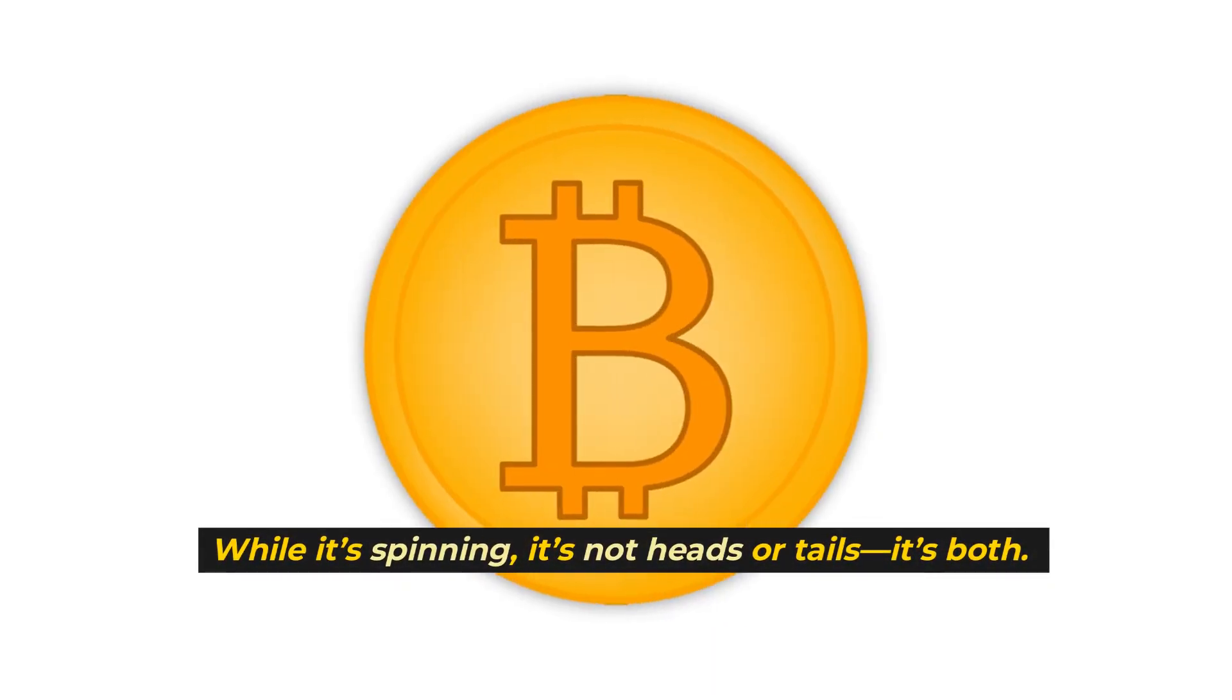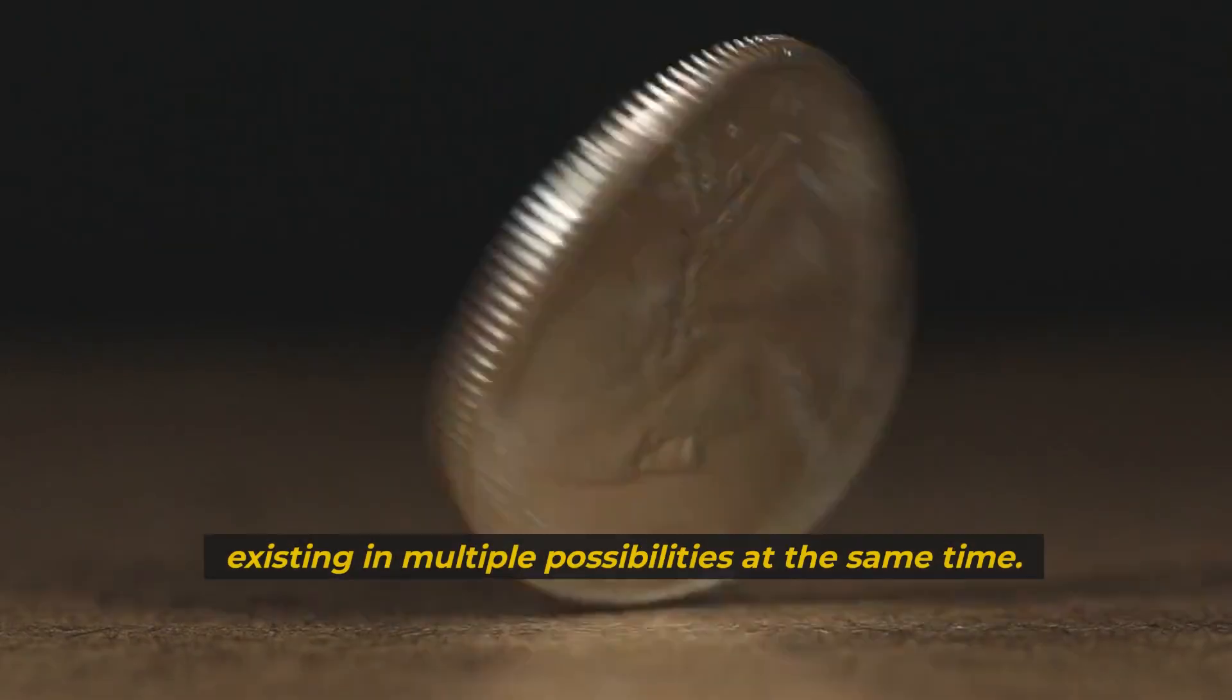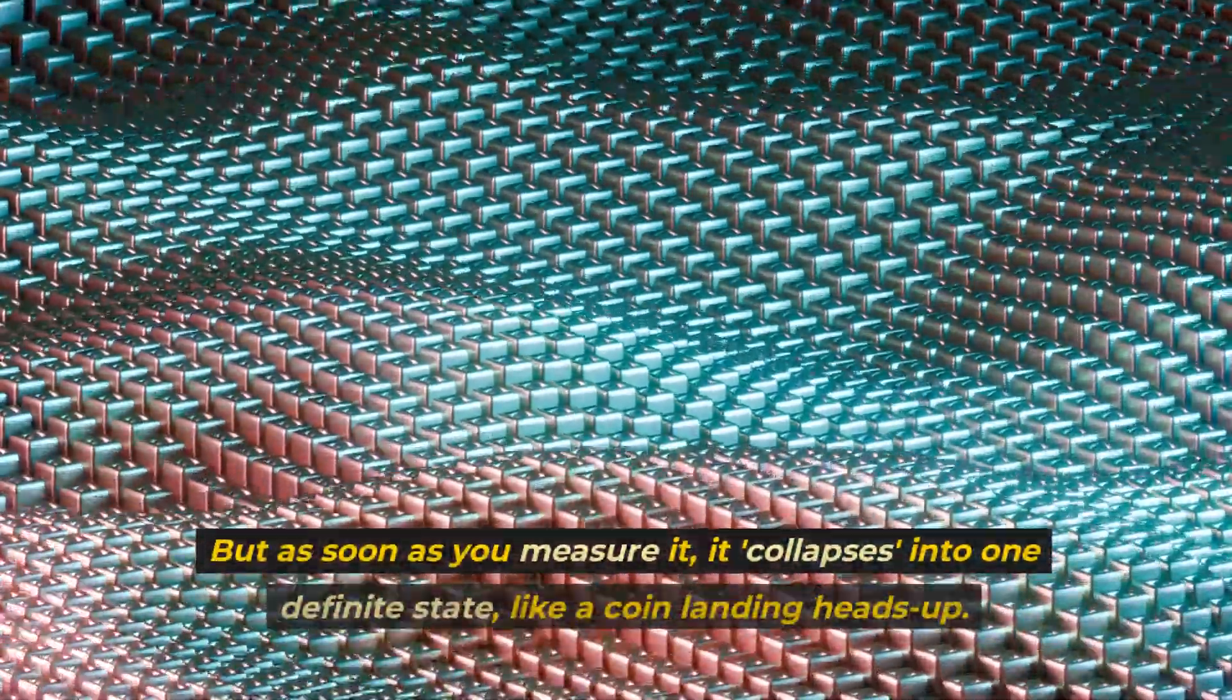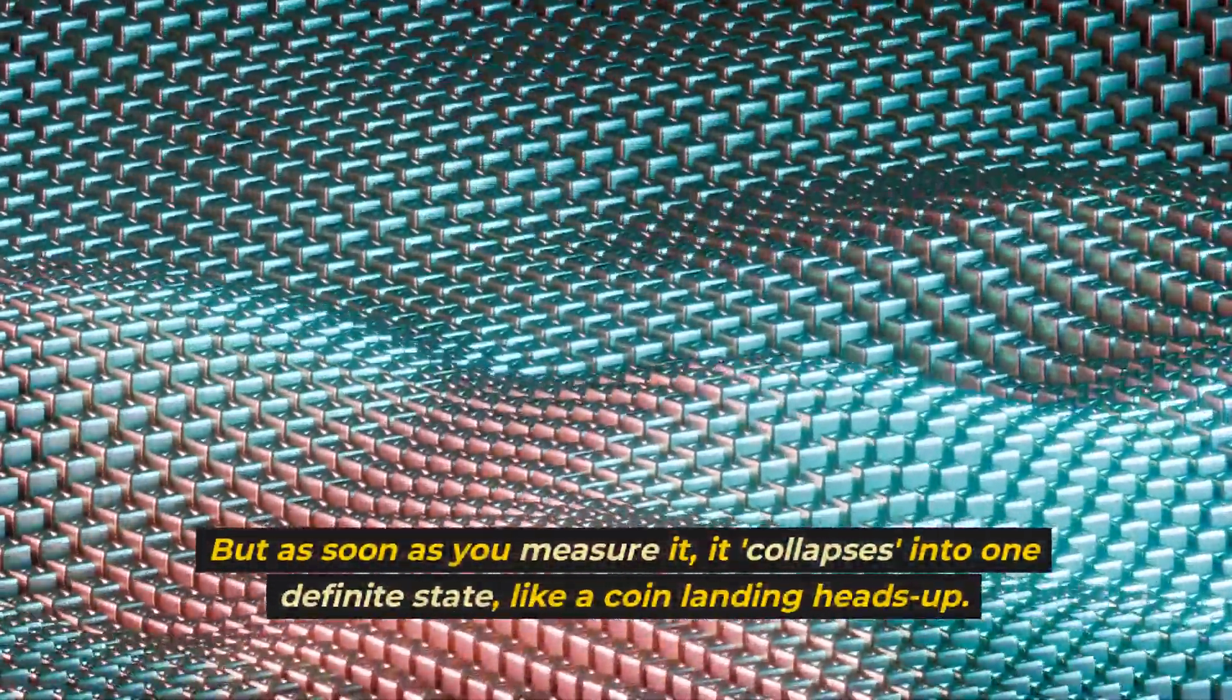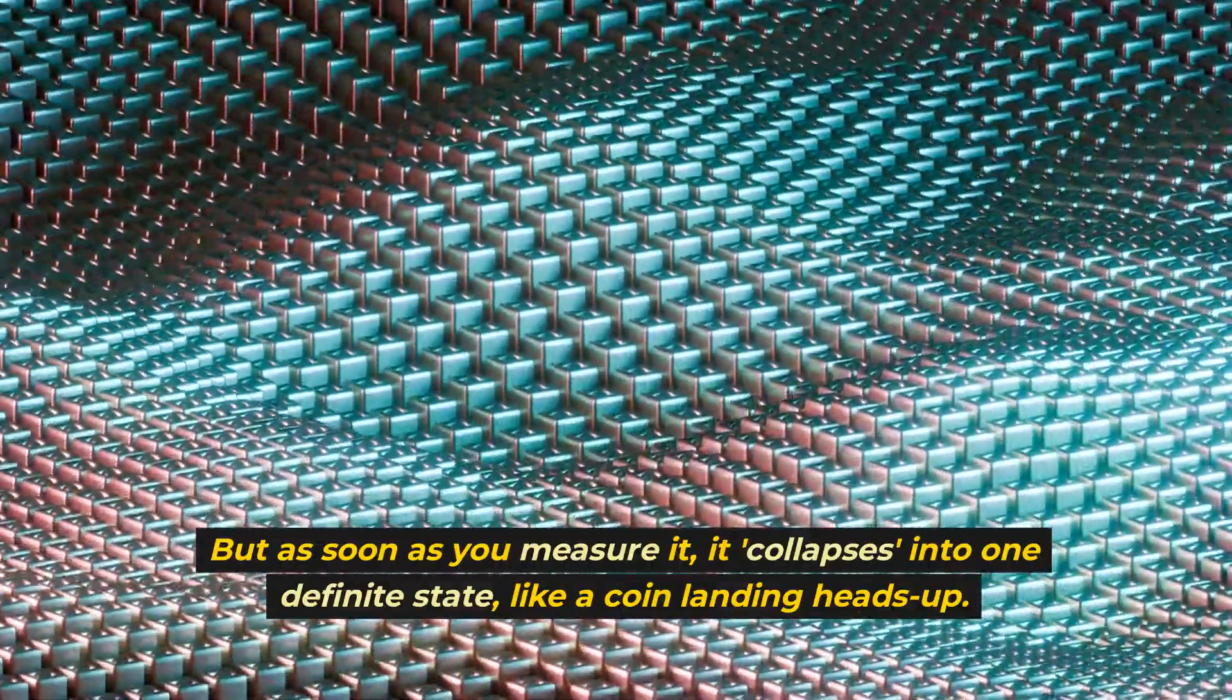Picture a spinning coin. While it's spinning, it's not heads or tails, it's both. In the quantum world, a particle behaves like that spinning coin, existing in multiple possibilities at the same time. But as soon as you measure it, it collapses into one definite state, like a coin landing heads up.